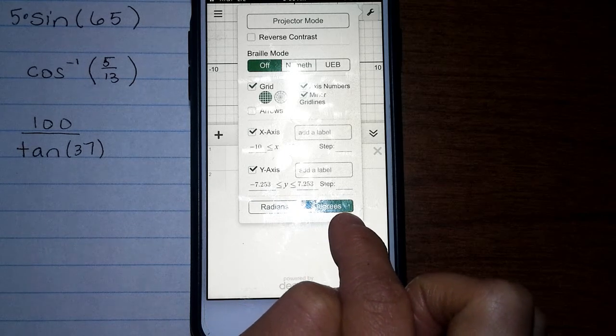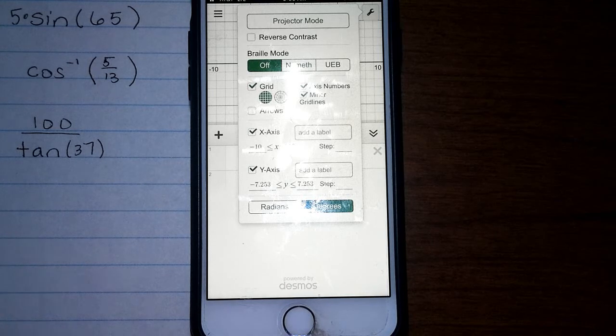The reason is because we do degrees in geometry. Radians will be in another math.